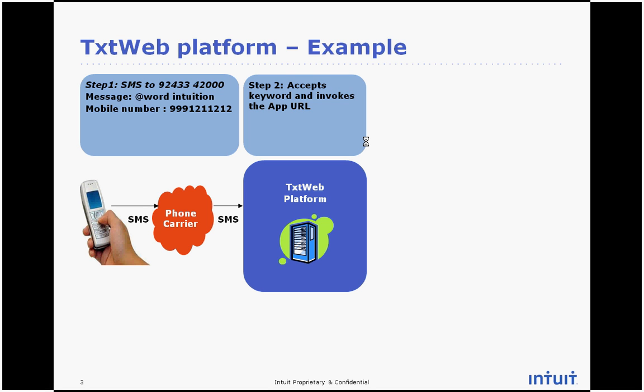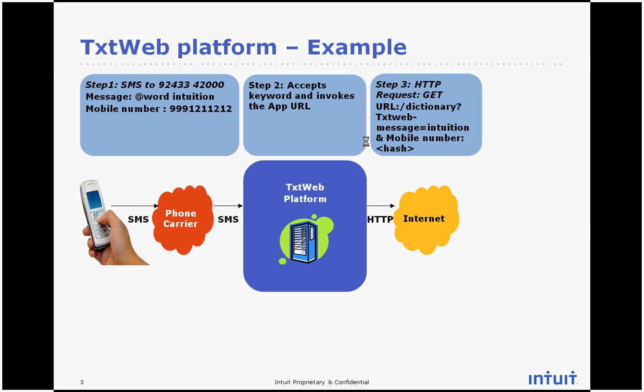The request reaches the phone carrier and then is forwarded to the TextWeb platform. At this point, the TextWeb platform gets the request. It takes the keyword — which in this case is "word" — and looks up in its database the application URL to which "@word" maps to. In our example, word is an application written by a third party, running on a server over the internet, and registered with the TextWeb platform.